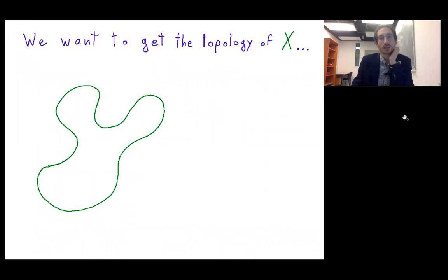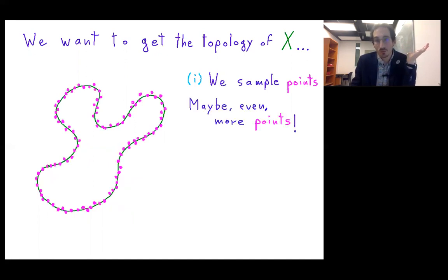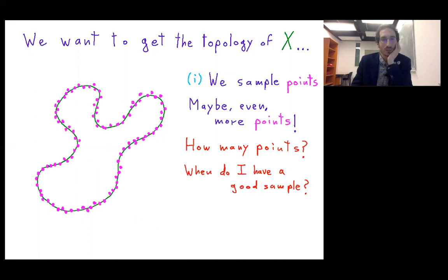So we have a certain set X with topology we want to get, so we sample points. We might even sample some more points, and here the question is how many points or when do I get a good sample?